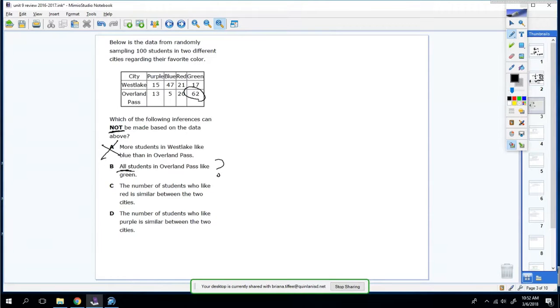So C, the number of students who like red is similar between the two cities. Well, here's red. 20 and 21. That's similar. It doesn't mean they're the same, but they're very similar. So that's true. And then finally, D, the purple is similar between the two cities. That's true as well. So the answer is B, because that is false.